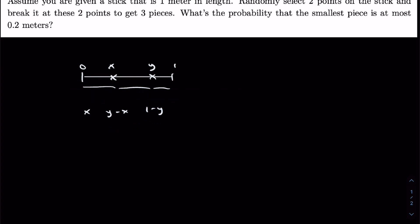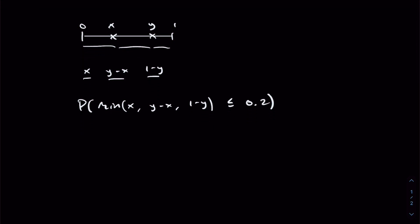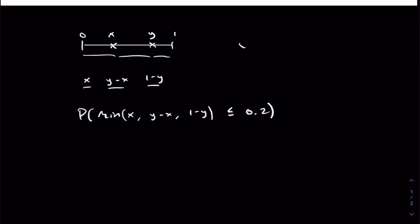The problem then asks for the probability that the length of the smallest of these three pieces is at most 0.2 meters. So let's write this in: the minimum of the length of these three pieces is at most 0.2 meters, which also means less than or equal to 0.2. This is not a very easy probability statement to just evaluate or even to look at intuitively and understand. x and y are both uniform random variables taking on values between 0 and 1.